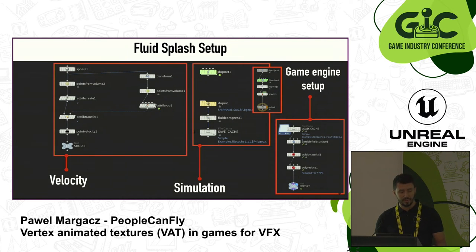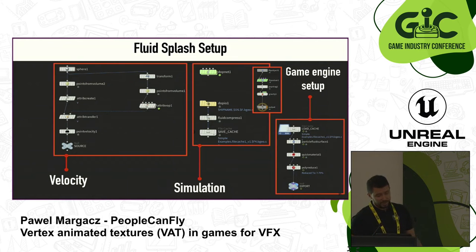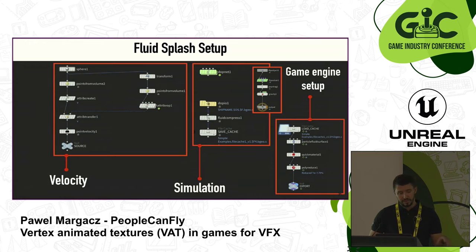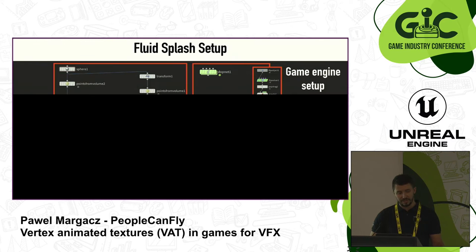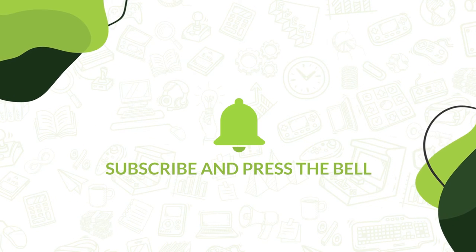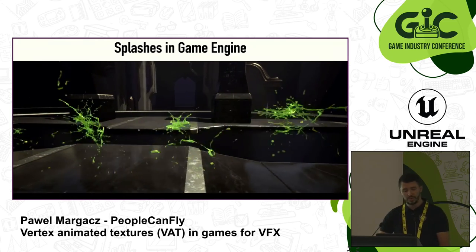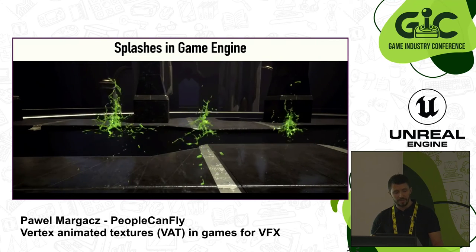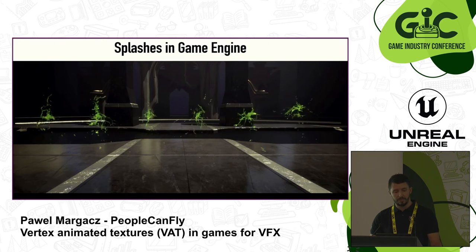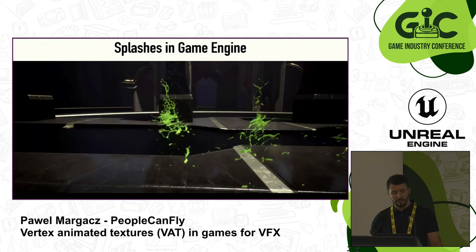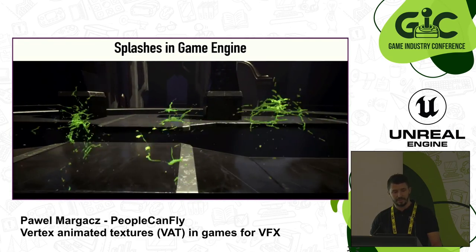We try to keep our Houdini setups clean in case someone else has to open and work with them. On the left I create the velocities for the splashes, which control the whole simulation. I plug it into the DOT network and the last part is the engine export. Everything — level of detail, movement, appearance — is controlled with one node: the attribute VOP in the velocity section. Here is footage taken directly from the game engine with isolated splashes, recolored to give you an idea of what's achievable with this VAT method.